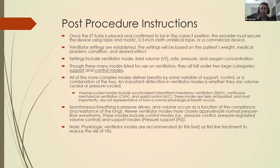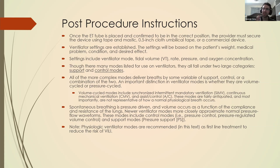Post-procedure considerations. Once the ET tube has been placed, you generally make sure it's confirmed in the right position — usually by getting a chest X-ray. You've already gone in and auscultated both sides and the epigastric region. Then you want to secure the tube. There are a few commercial anchoring devices, but usually we just use tape — wrapping pieces of tape and securing it along the side of the lip without applying any pressure to the lips to prevent necrosis.